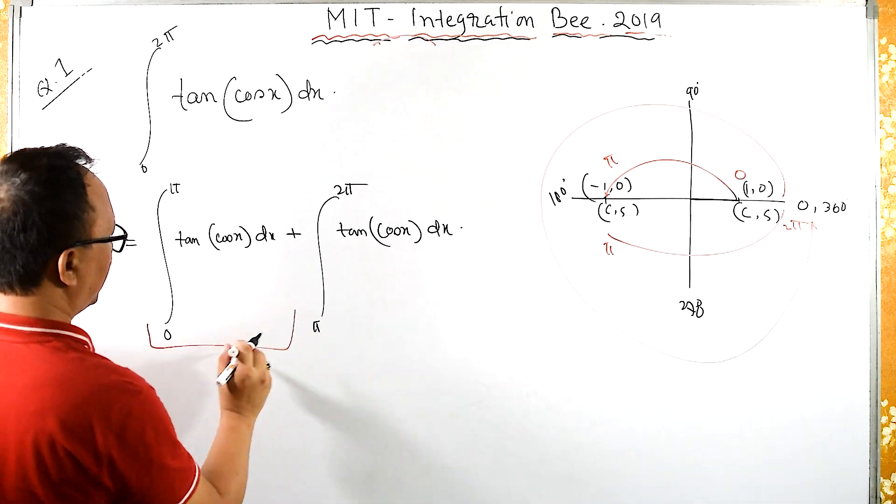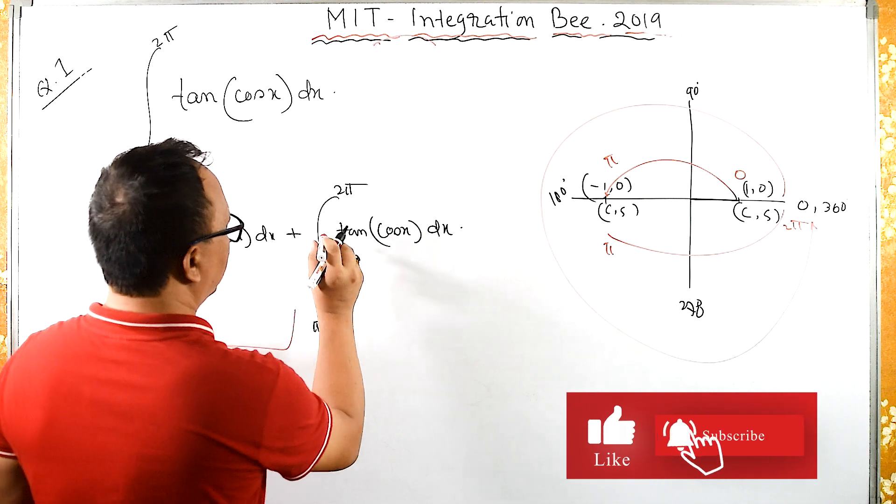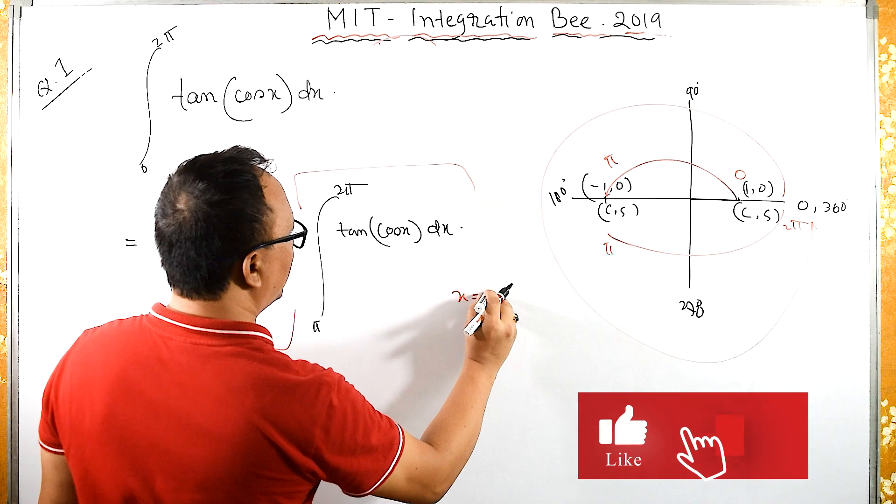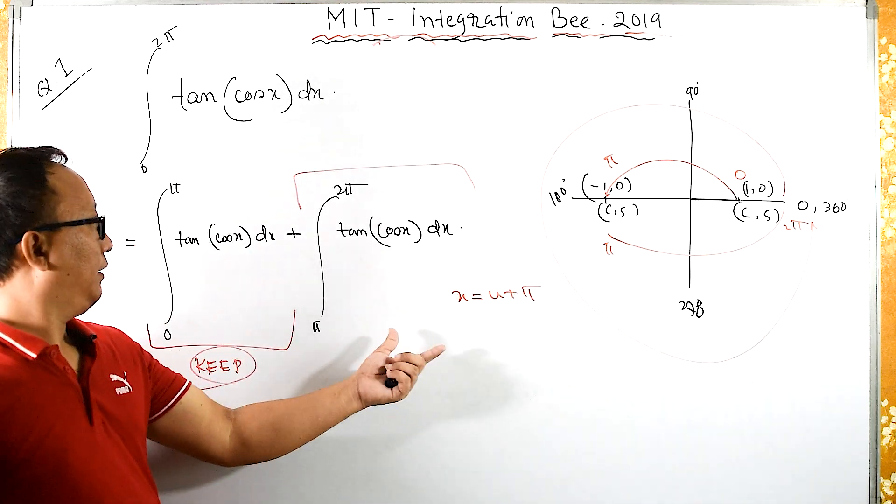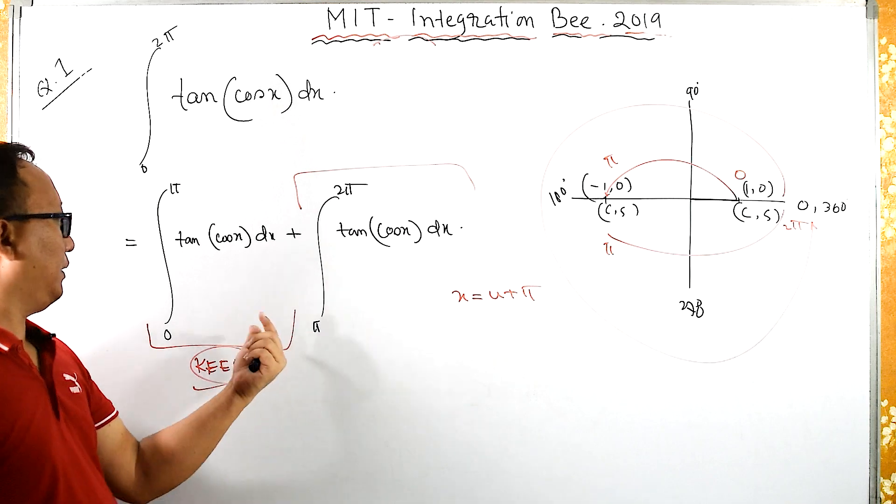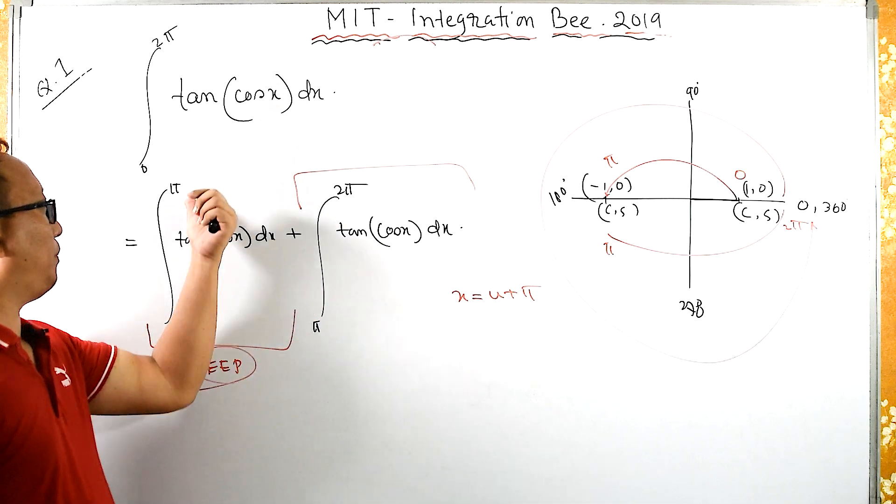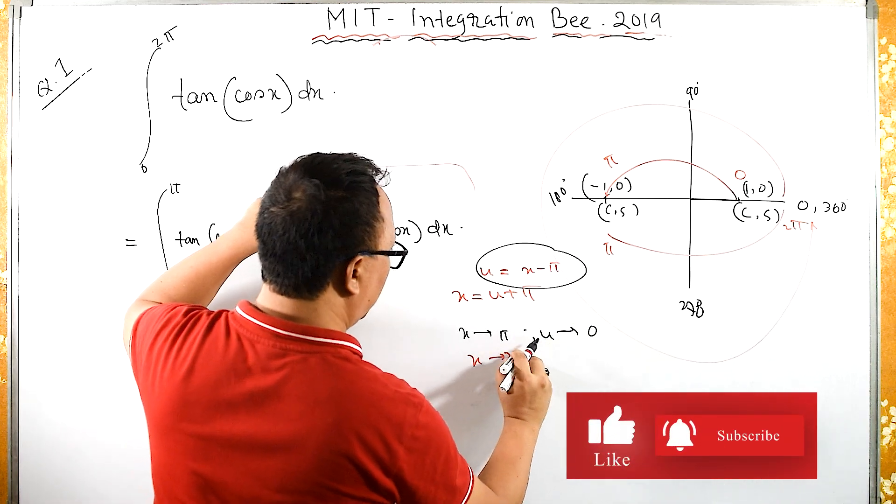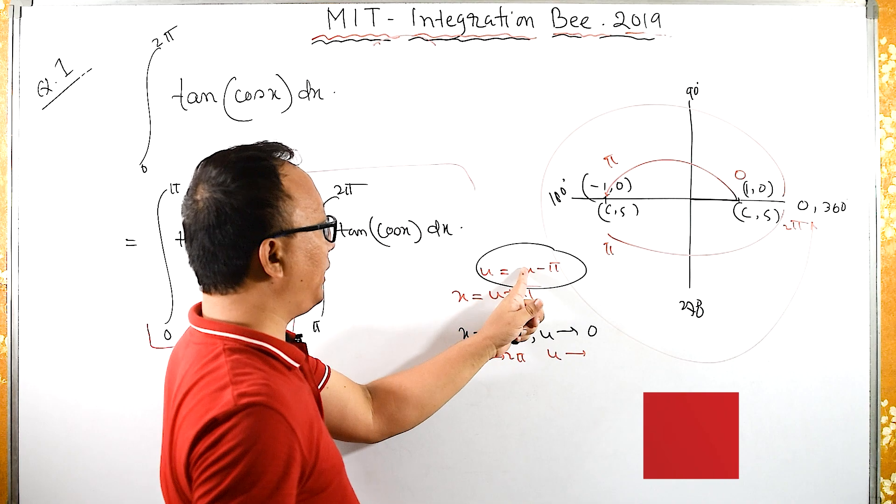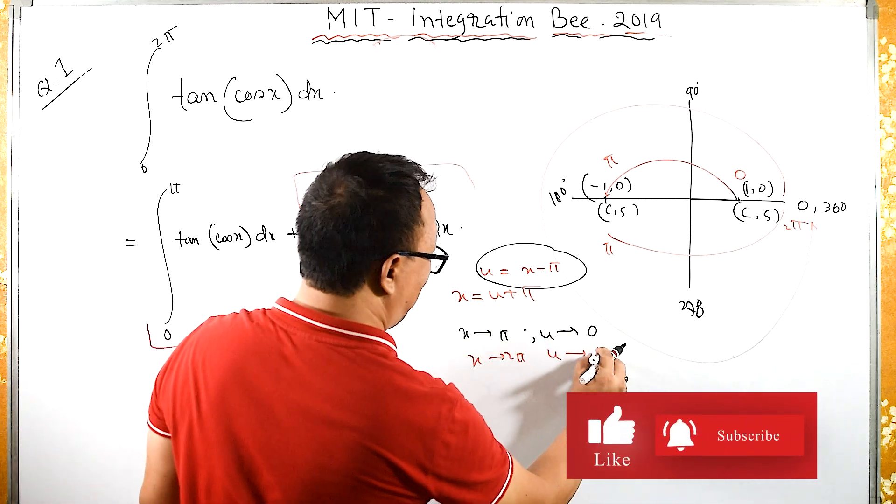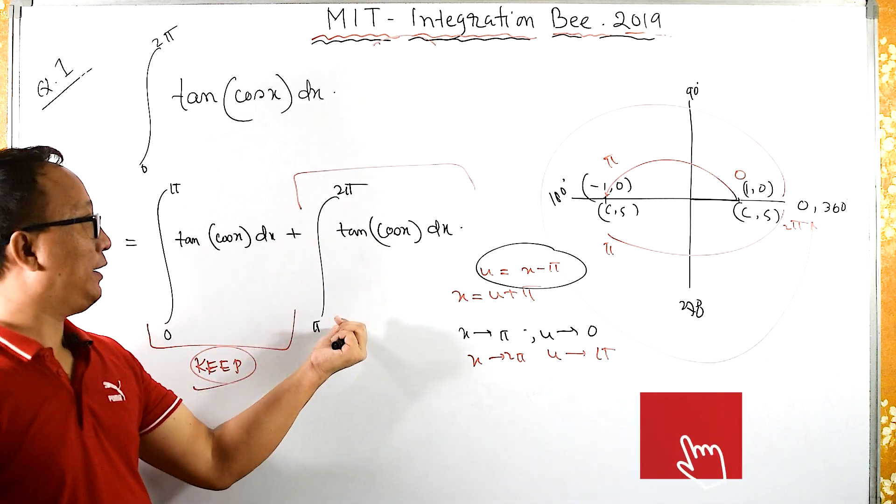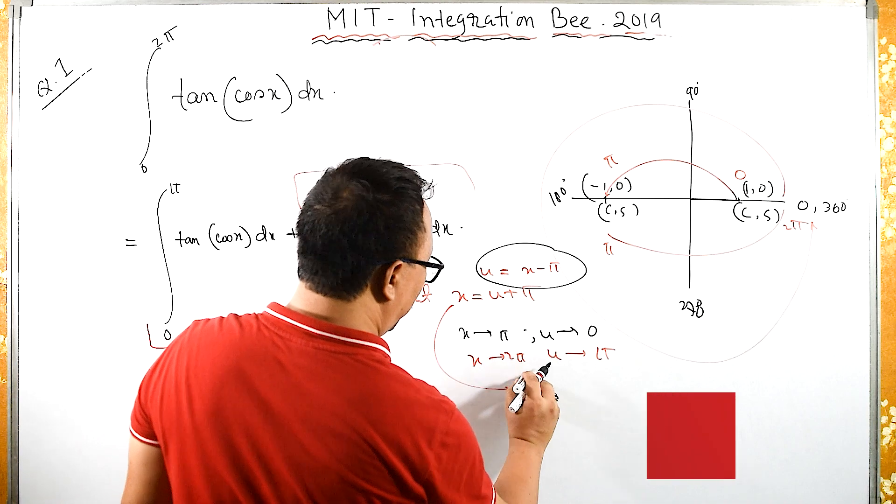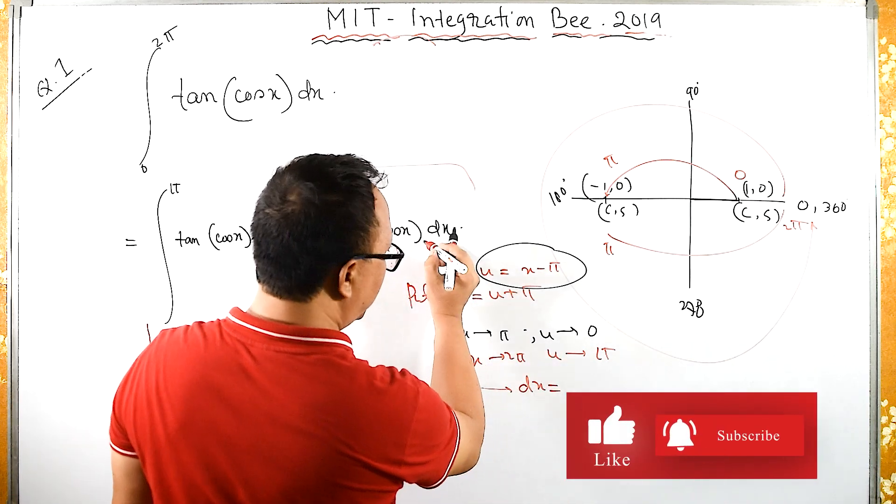Let us keep this as it is. We will solve this part. For this, I will substitute x = u + π because I want to bring the integration limit from π to 2π back to 0 to π. When x = π, then u = 0; when x = 2π, u = π. So the limit of integration becomes 0 to π.